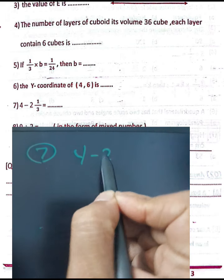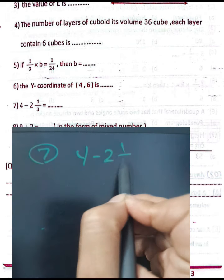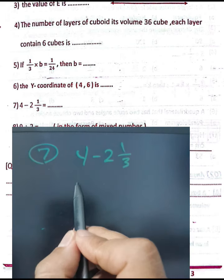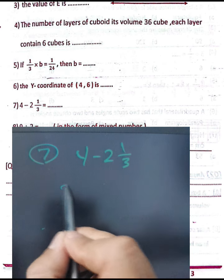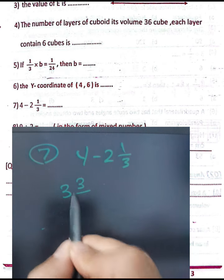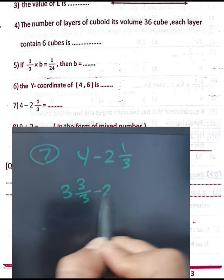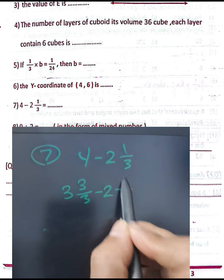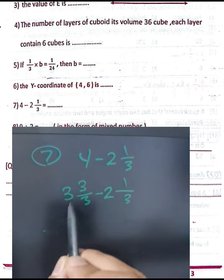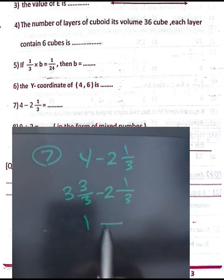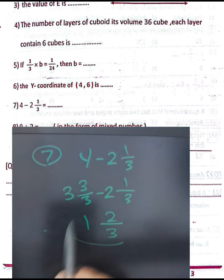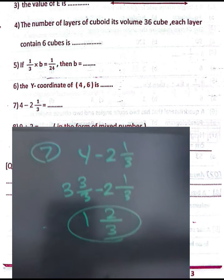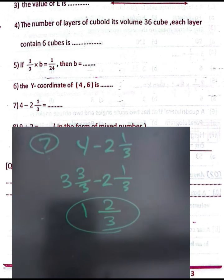Question number seven: four subtract two and one-third. Convert 4 to a mixed number: write it as three and three-thirds. Then subtract: three and three-thirds minus two and one-third. Three minus two equals one, and three-thirds minus one-third equals two-thirds. The result is one and two-thirds.